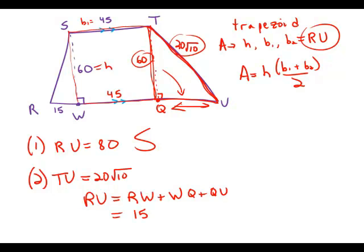Well, RW is 15. WQ, the other side of that rectangle, is 45. Plus, and then if we figure out what QU is from the Pythagorean theorem, we'd be able to figure out RU.